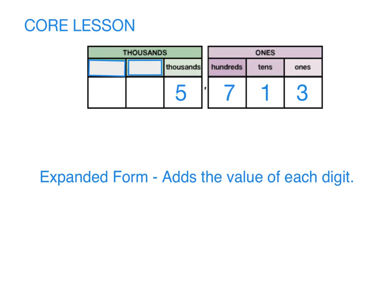The third and final way to write a number is expanded form. Expanded form is when you add the value of each digit. Remember that value just means how much each digit is worth.